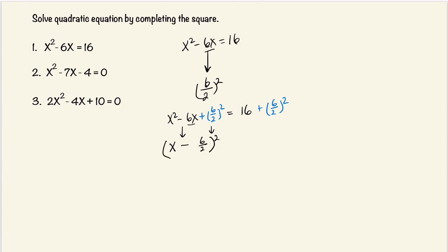This is squared, and that's equal to 16 plus 6 divided by 2 — which is 3 — squared. So 16 plus 9. We're going to rewrite this as x minus 3, squared, is equal to 16 plus 9, which is 25.